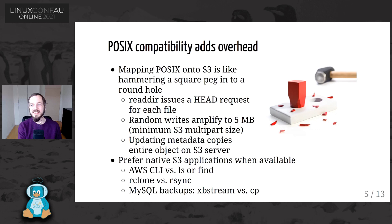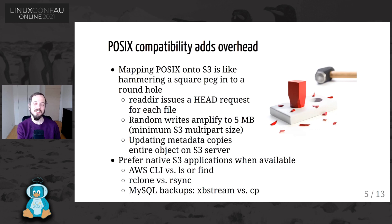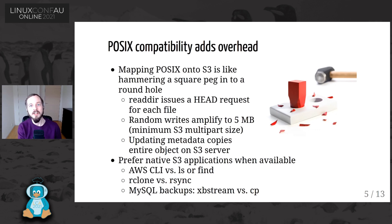Updating metadata — like chmod +x on an object — actually copies all the data on the S3 server, even though S3FS doesn't see that directly. We recommend using native applications when available. AWS CLI is much faster than ls or find. Rclone has native S3 support, which is better than rsync onto an S3FS mount point. Many applications like Percona XtraBackup have native S3 support — it's better to use that natively instead of writing locally and then copying.